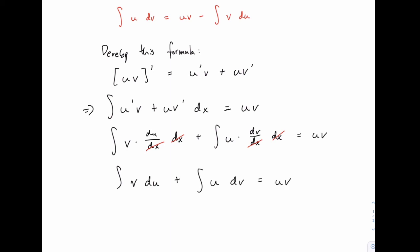And you should already be able to see how this is going to lead to the formula we have in red at the top of the screen. We can just rearrange by solving for the integral of u dv. If we subtract the integral of v du from both sides, we get to that formula.